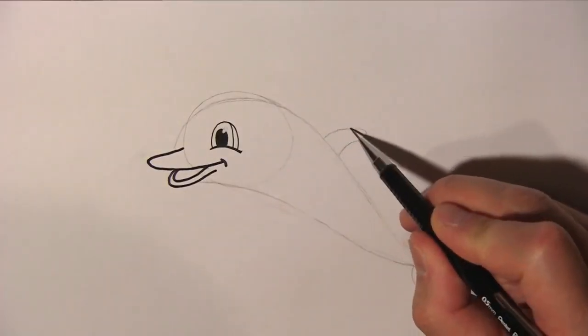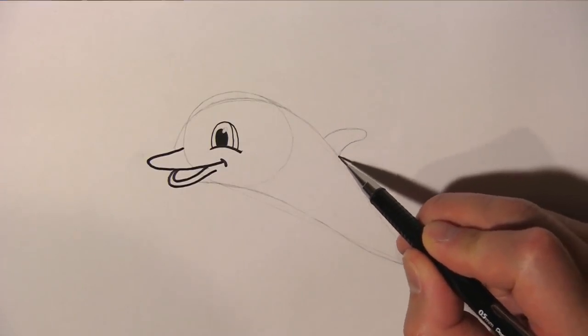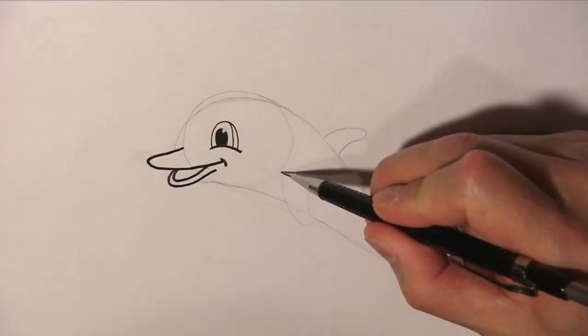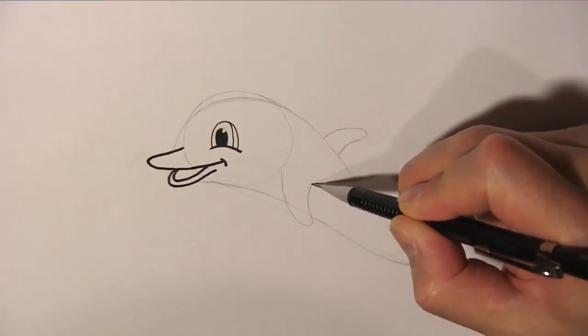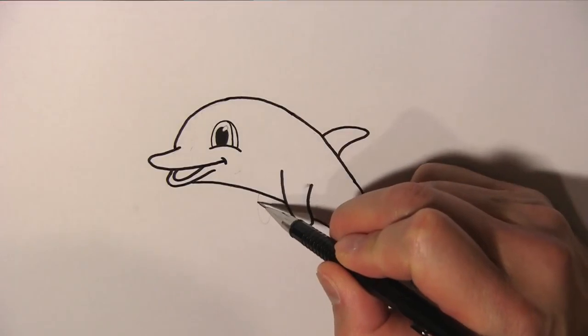Now we draw the dorsal fin on top. And add a flipper on this side of the dolphin. And another one on the other side.